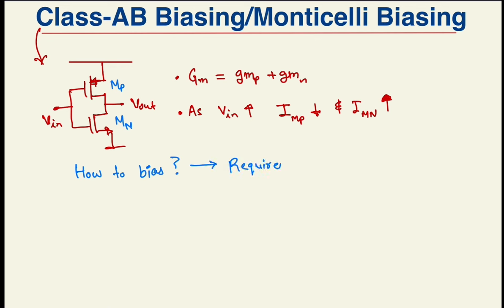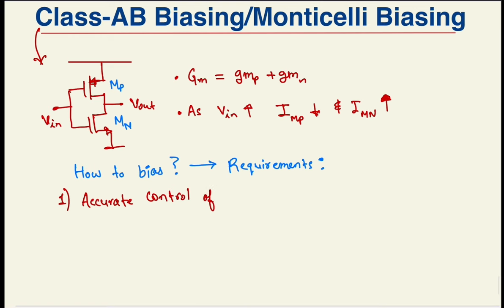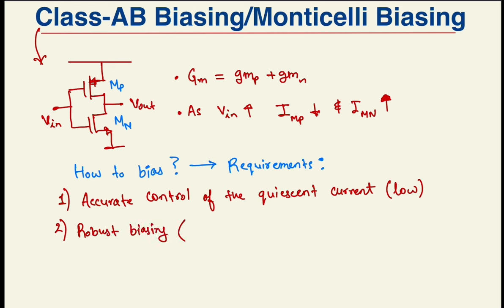So what exactly do we require from our biasing? Well, we want an accurate control on the quiescent current. Of course, it has to be low. The bias circuit should be robust. For that, remember, the same kind of elements track each other across process.